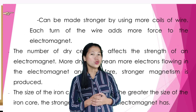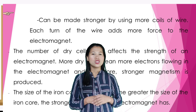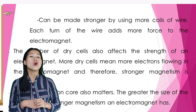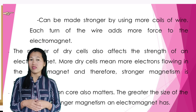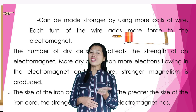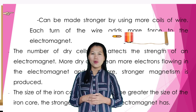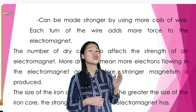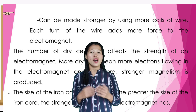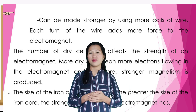An electromagnet can be made stronger by using more coils of wire — each turn of wire adds more force to the electromagnet. The number of dry cells also affects the strength of an electromagnet; more dry cells means more electrons flowing and therefore stronger magnetism is produced. To make the electromagnet work, there must be a complete circuit through which electrons can move. When the connection to a terminal is disconnected, the electromagnet loses its ability to magnetize. The size of the iron core also matters — the greater the size of the iron core, the stronger the magnetism an electromagnet has.